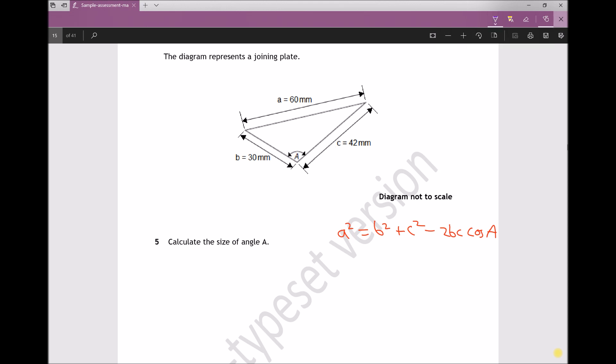We're first going to find or isolate cos A, and then we'll be able to find the value of angle A. Let's begin by inputting some values. A is 60 millimeters, so we have 60 squared. We're going to work in millimeters on this question. B is 30 and C is 42. So we have 60 squared equals 30 squared plus 42 squared minus 2 times 30 times 42 cos A.